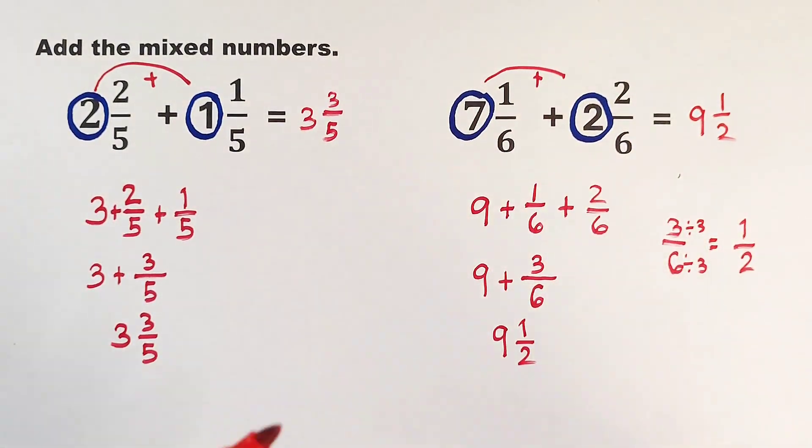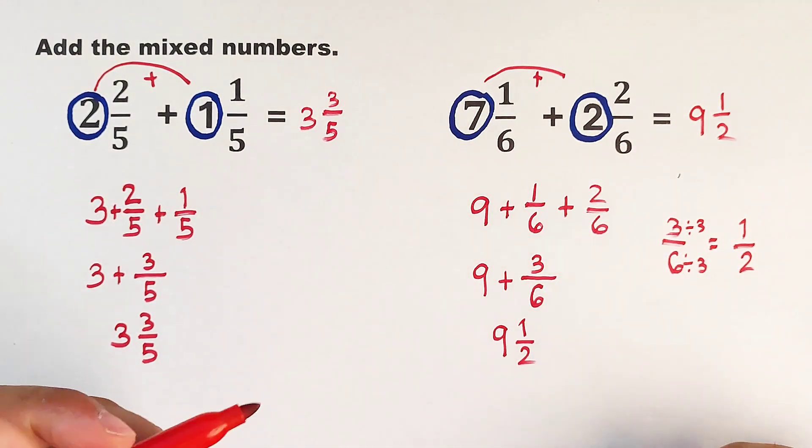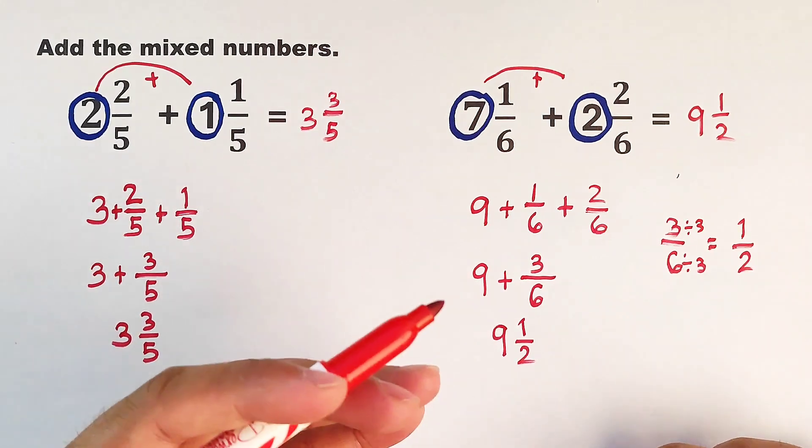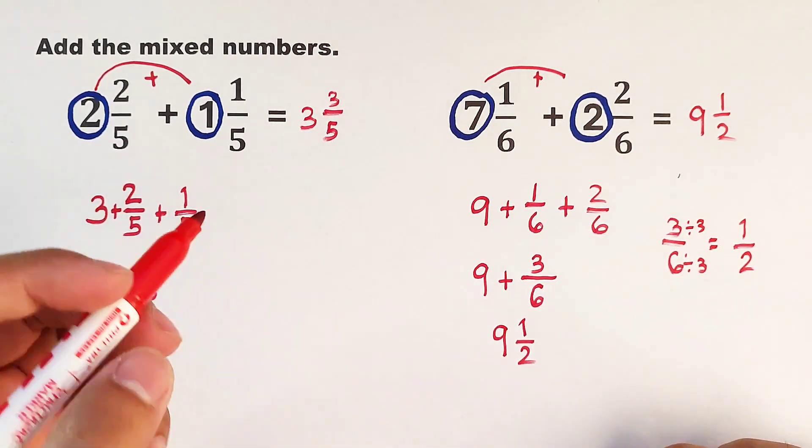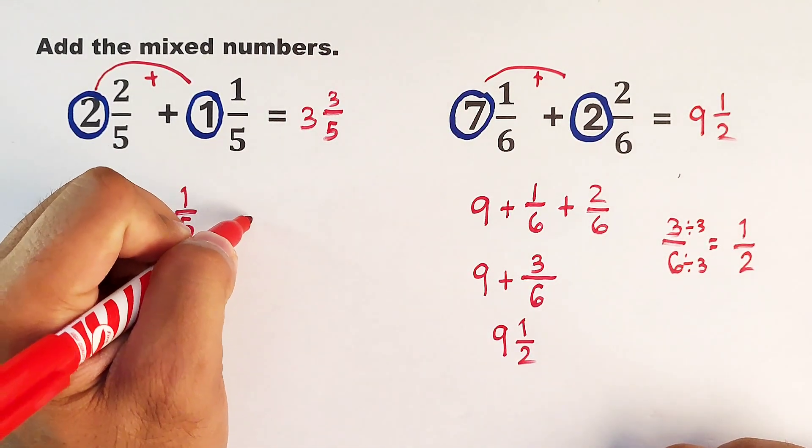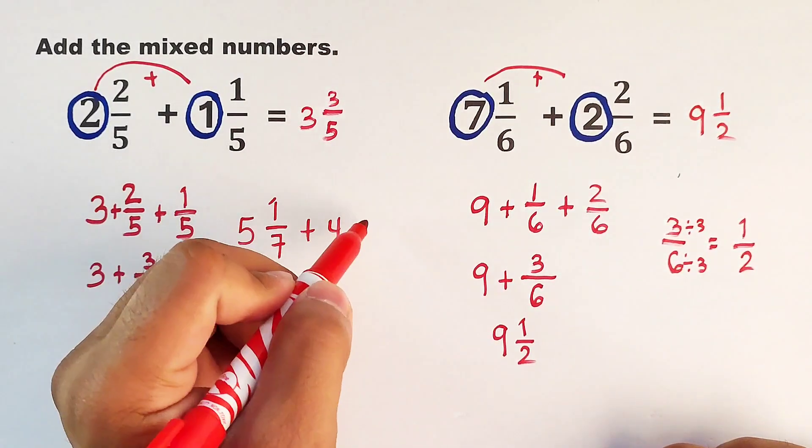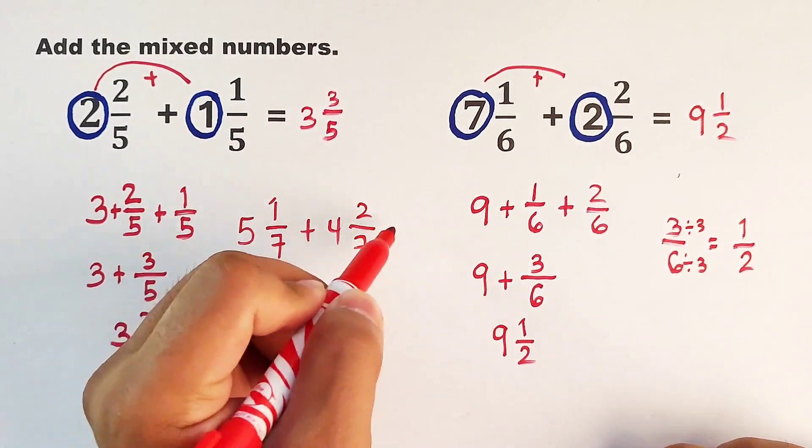So guys, as part of our routine, let me give you another example and let me know what is your answer in the comment section down below. So we have number 3: 5 and 1 over 7 plus 4 and 2 over 7.